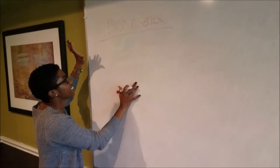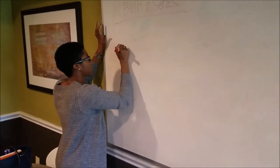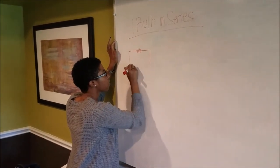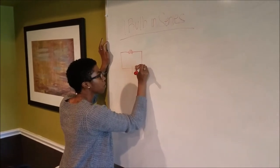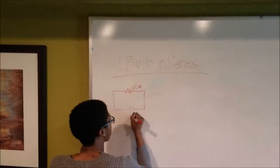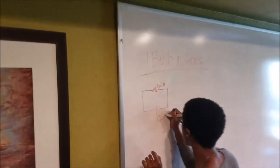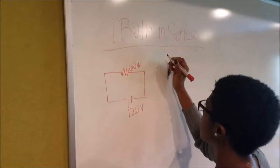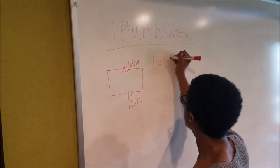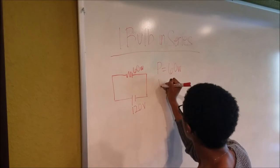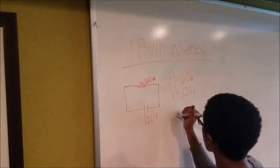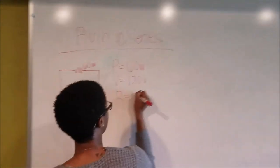What we're going to do now is our calculations for one bulb in series. So, I'm going to draw out the circuit. The bulb is 60 watts and our voltage is 120 volts. So, we're going to solve for the resistance. What we have is power equals 60 watts. Our voltage equals 120 volts. And we're trying to solve for our resistance.